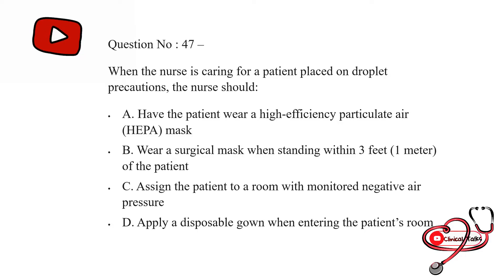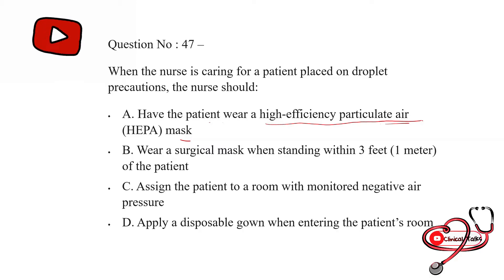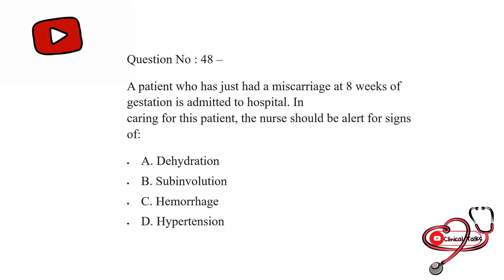When the nurse is caring for a patient placed on droplet precautions, the nurse should. Option first: have the patient wear a HEPA (high-efficiency particulate air) mask; second: wear a surgical mask when standing within 2 feet or 1 meter of the patient; third: assign the patient to a room with monitored negative air pressure; last: apply a disposable gown when entering the patient's room. The correct answer is to wear a surgical mask when standing within 3 feet or 1 meter of the patient.